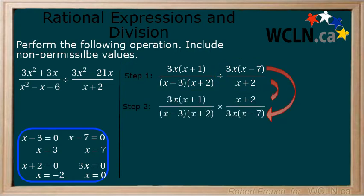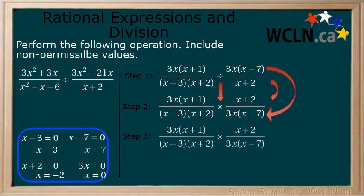Step 2: Take the reciprocal of the expression you are dividing by and change the division to a multiplication. Step 3: Cancel common factors. Here, we can cancel the 3x and the x plus 2.